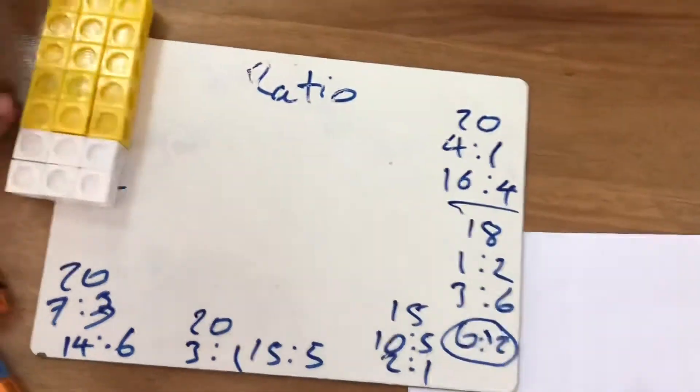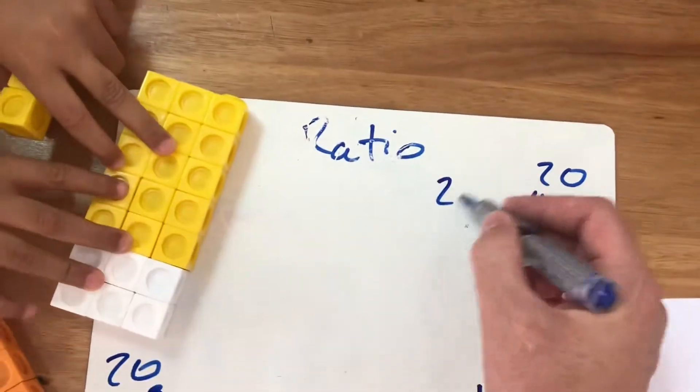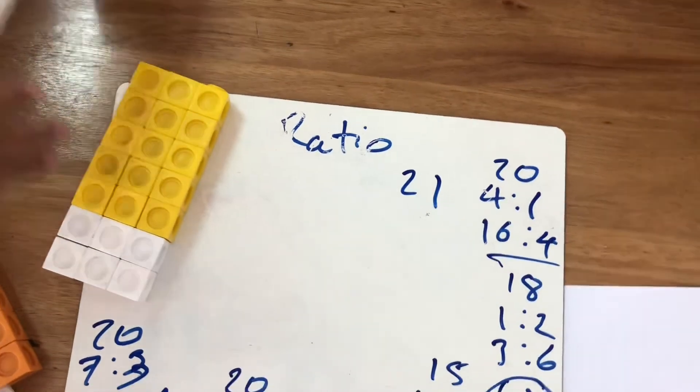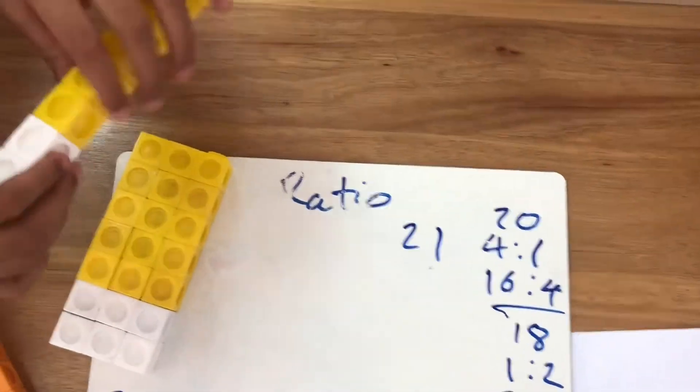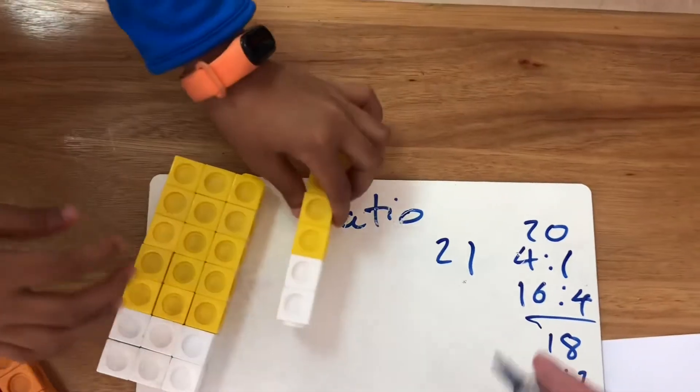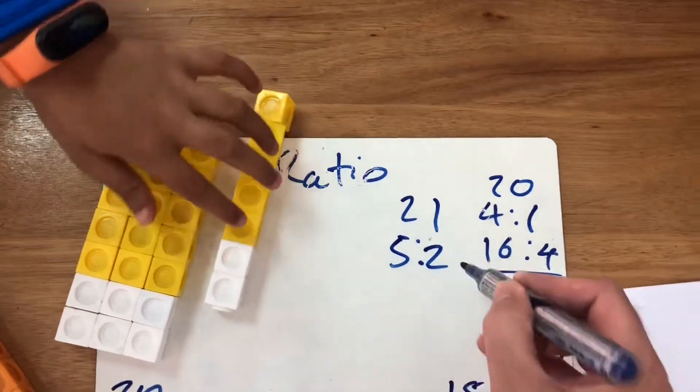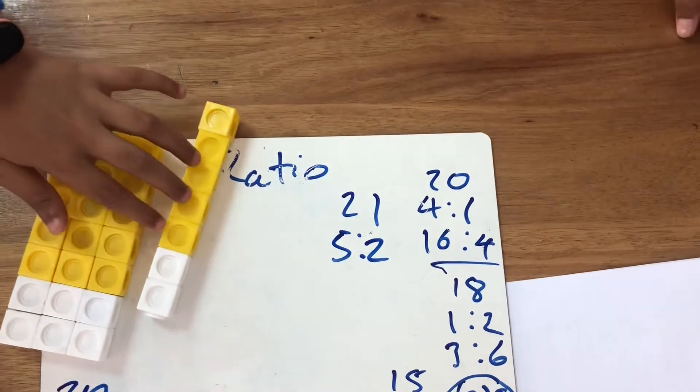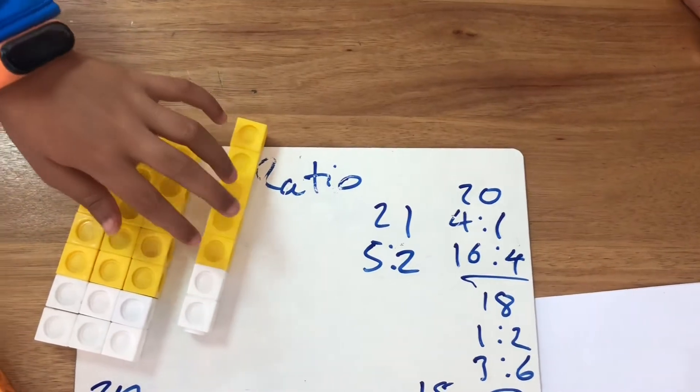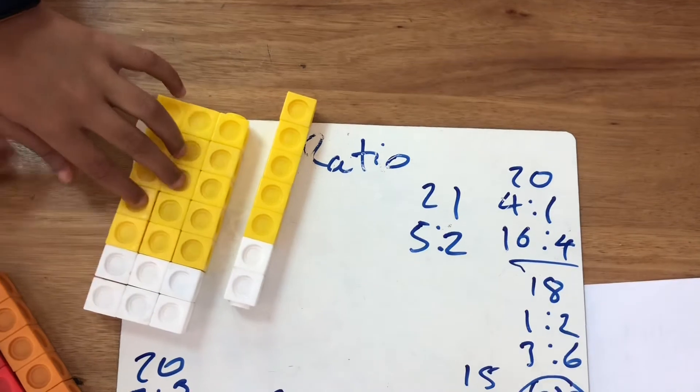Next. So I have 21 blocks here. So I want to break down this into the ratio of 5 to 2. So if you add this up it's 7. If you add this up it's 7. And then if you do 21 divided by 7 which equals 3.